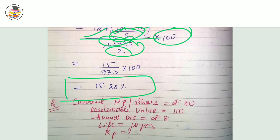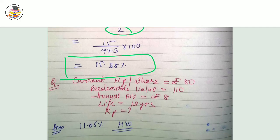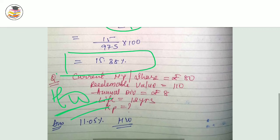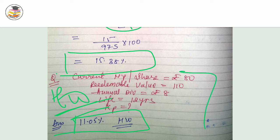This is your solved example. Now there is a homework question for you. You have to do it by yourself and the answer is approximately 11.05%.